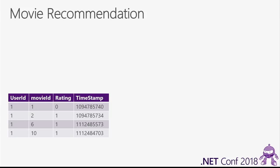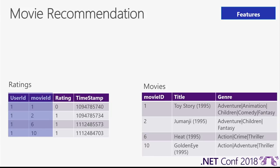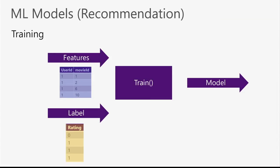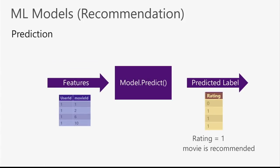At prediction time, the model takes user ID and movie ID as input and returns the predicted label (0 or 1 for liked or not liked) along with a score field. At training time, features are user ID and movie ID; the label is what we're predicting. Let's see this app in action.